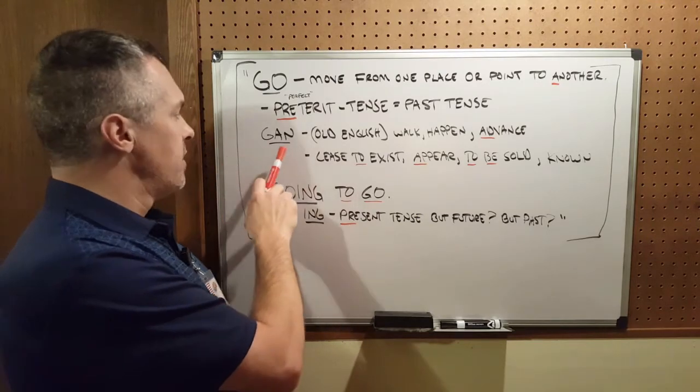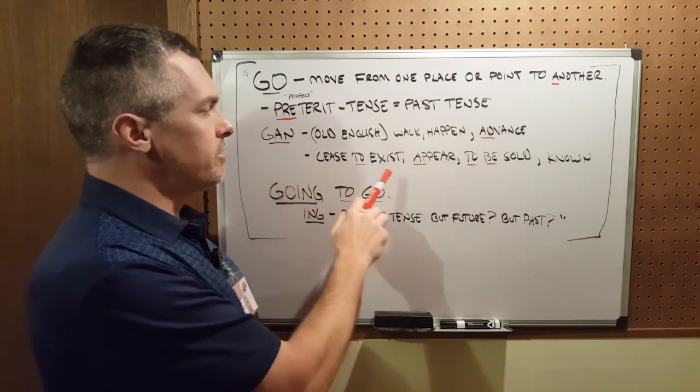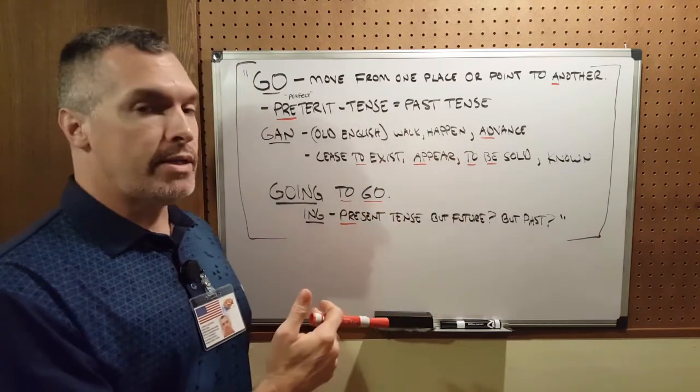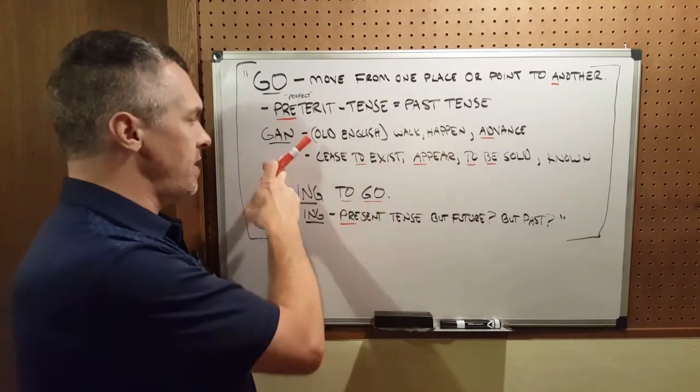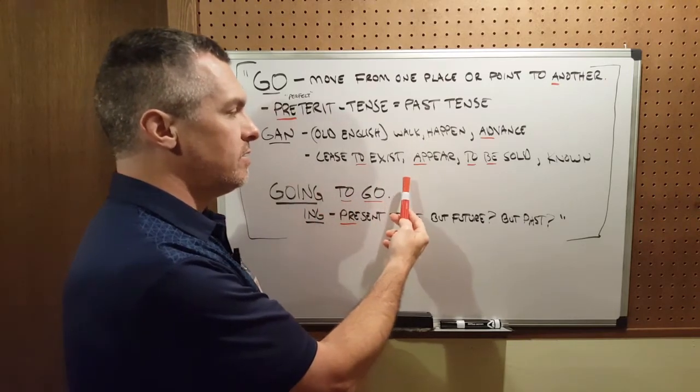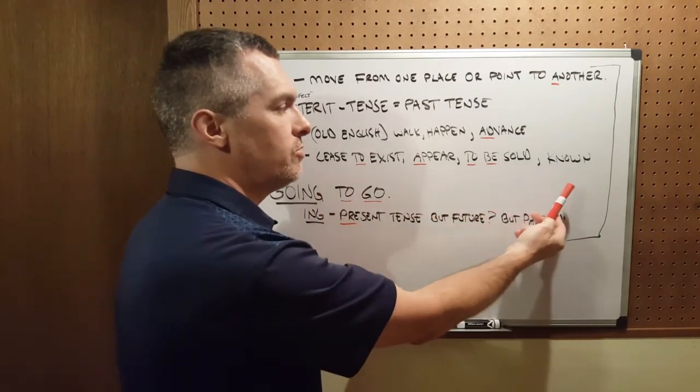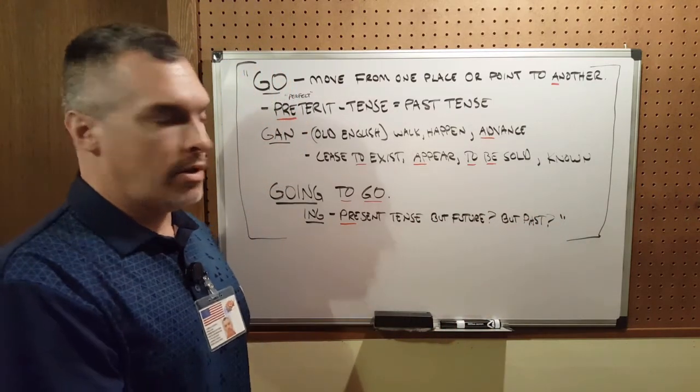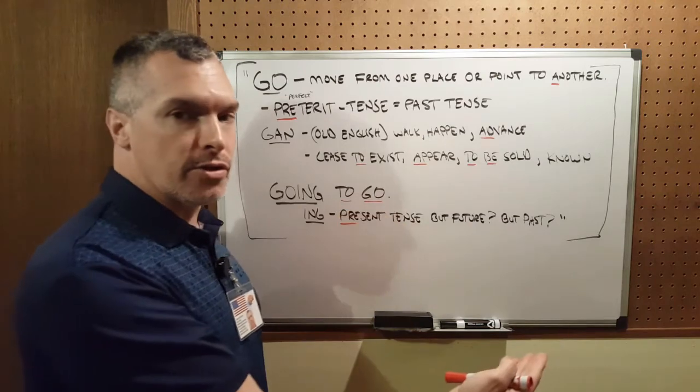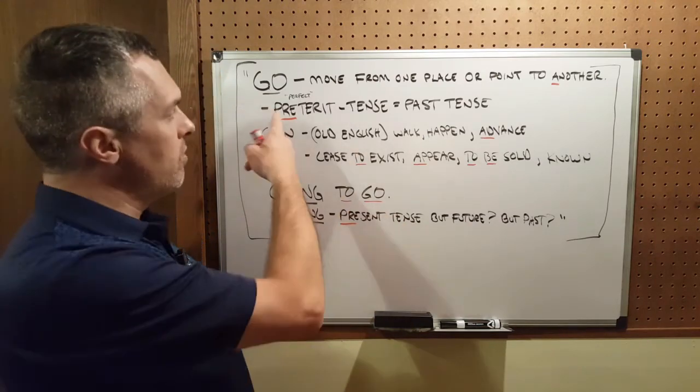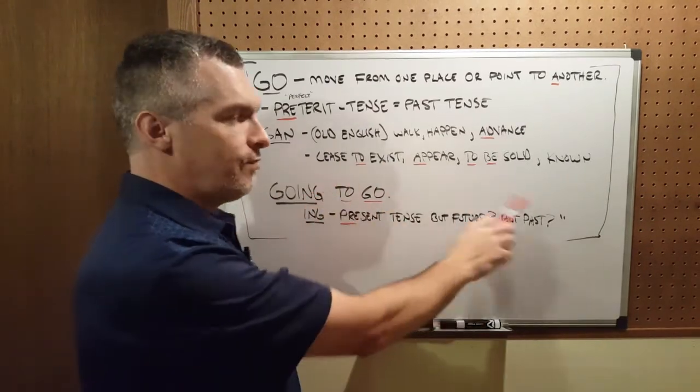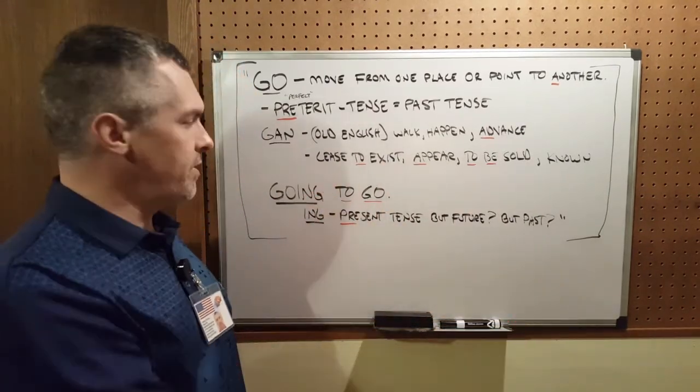It comes from the root word gan, which is Old English, which means walk, happen, advance. Other meanings, earlier meanings from this same root, also could be cease to exist, to appear, to be sold, to be known, which are all implying a future time. So go is a preterit tense, past tense, with future time definitions.